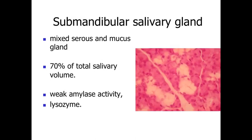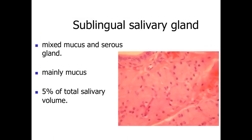Within the submandibular salivary gland, we're looking at a mixed gland with serous and mucus-secreting cells, so we can see some serous demilunes in this location. The submandibular salivary gland accounts for about 70% of the total salivary volume and has relatively weak amylase activity — breaking down some sugars — as well as some lysozyme activity, providing antibacterial effects. Finally, the sublingual salivary gland is a mixed mucus and serous gland, but primarily mucus. The majority of the cells are pale mucus-secreting cells, and it comprises about 5% of the total salivary volume.